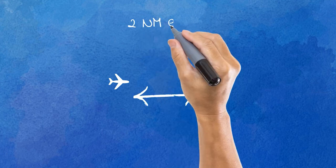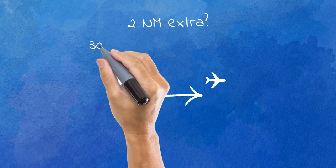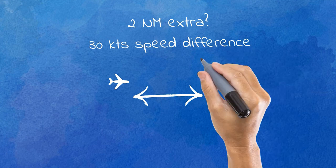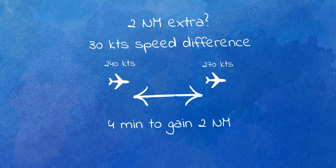The speed difference can, of course, be scaled to fit the scenario. If you only need two extra miles in between, instead of assigning a speed difference of 60 knots and waiting two minutes, you will gain the same result with only 30 knots of speed difference and waiting four minutes — whatever suits the particular traffic situation best.